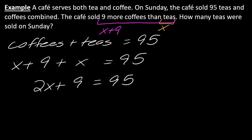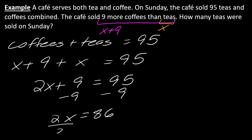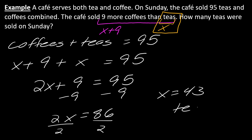So that's the setup. From here I can solve as usual. This will be 2X plus 9 equals 95. I can subtract off the 9 to get 2X equals 86. Divide both sides by 2 and I get X equals 43. They're asking how many teas were sold — X represents teas, so 43 teas were sold.